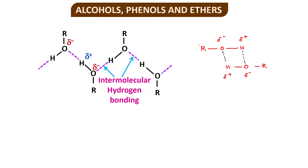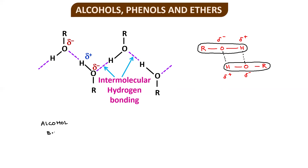Because of this intermolecular hydrogen bonding, the boiling point of alcohols is greater than that of alkenes, alkyl halides, aldehydes, ketones, and ethers. Such hydrogen bonding is absent in alkyl halides, aldehydes, and ketones, and therefore more energy is required to break the bonds in alcohols, giving them a higher boiling point.